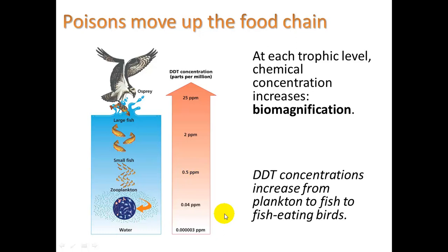DDT concentrations increase from plankton to fish to fish-eating birds. Water may have some DDT residue from agricultural field runoff. The phytoplankton get that DDT into their bodies, which is eaten by zooplankton, small fish, large fish, and finally osprey. If you look at DDT concentrations in parts per million, they're very small at first but get bigger — increasing by approximately a factor of 10 at each level. This is related to the 10% rule, where it takes about 10 times the body mass at the lower trophic level to meet the needs of the higher trophic level. This is biomagnification.